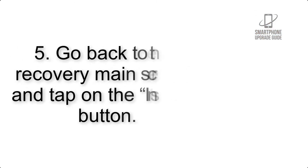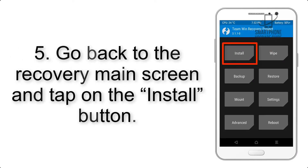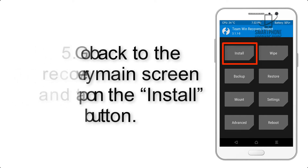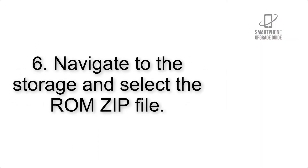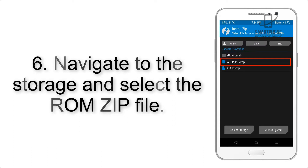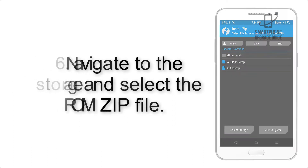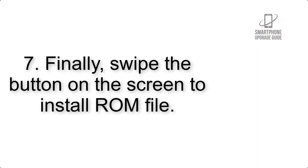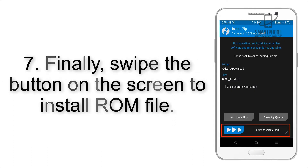Step 4: Swipe the button to wipe the device. Step 5: Go back to the recovery main screen and tap on the Install button. Step 6: Navigate to the storage and select the ROM zip file.